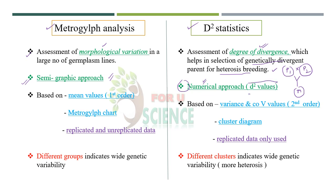Using D² statistics, we calculate D² values and compare those values from one genotype to another, measuring divergence. The more the divergence, the more the possibility of getting variability. Metroglyph analysis is based mainly on mean values — the first-order statistics — and we prepare a metroglyph chart. It can use replicated as well as unreplicated data.